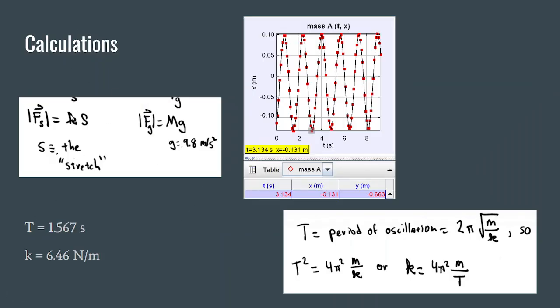So in this, we have calculations. We have T, which is the period, which is equal to 1.567 seconds, we found using this over here. And we also found the spring constant k, which is equal to 6.46 newton meters, which is found through these other calculations within here. And this is some tracker data showing the graph.